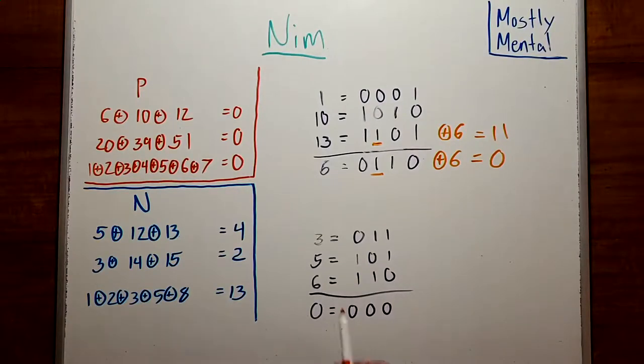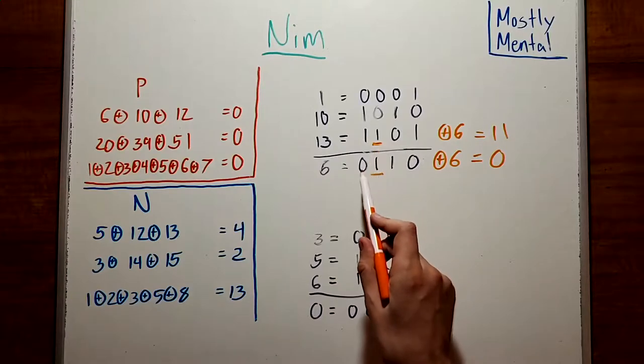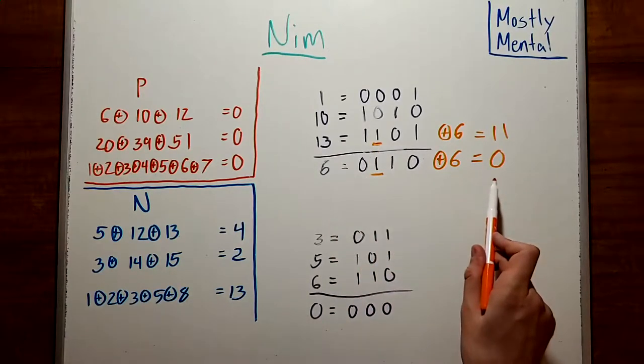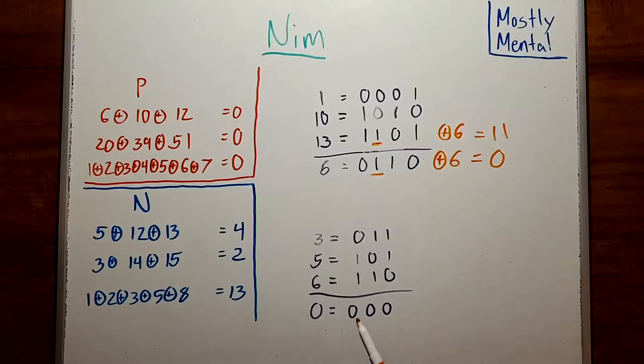On the other hand, changing exactly one term in a sum will always change the total. So, removing counters from one pile when the total is zero has to give us a total that's non-zero. That is, moving from a position with NIM sum zero leaves a position with a non-zero sum. So, we can move from any position with a non-zero sum to a position with sum zero. And every move from a position with sum zero yields a non-zero sum. And that's exactly how we classified P and N positions.